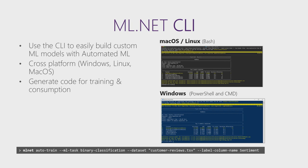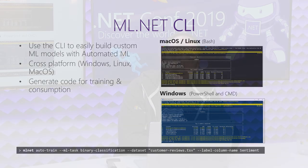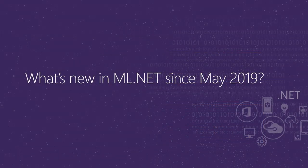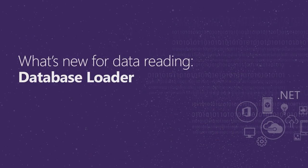Just to mention: with the CLI, the command-line interface, you can do the same thing I just did in Visual Studio. If you're on a Mac or Linux and not using Visual Studio, you can use the CLI with a command like `mlnet auto-train`, specifying the task, where the data is, and what you want to predict, and you'll get the code and model generated the same way.